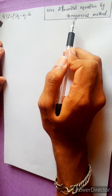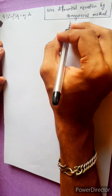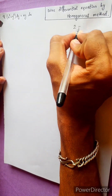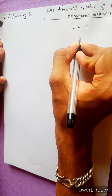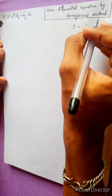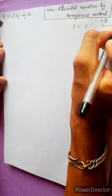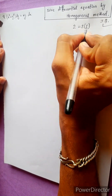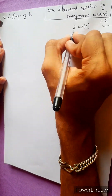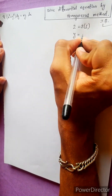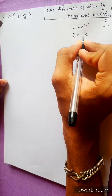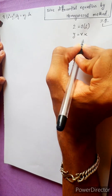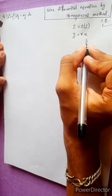Solve the differential equation by the homogeneous method. This means 2 equals to 1. This is the equation. This means y equals to x.